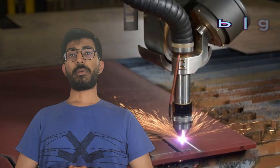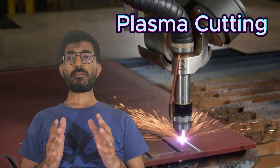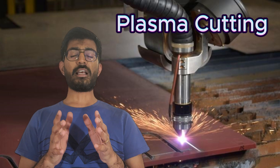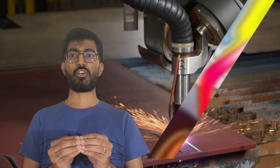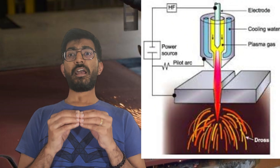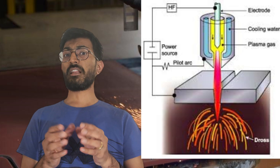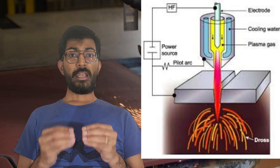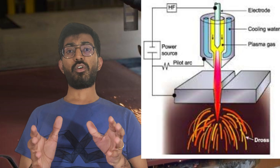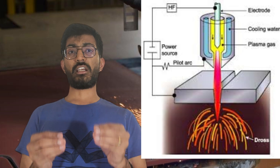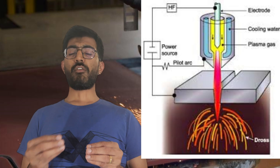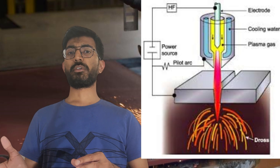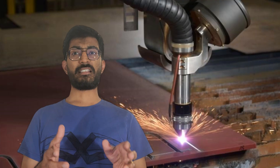Cutting method number two is plasma cutting. This method utilizes a super-heated plasma torch to cut through metal. It is faster than laser cutting and can handle quite thick material, but it may not offer the same level of precision as laser cutting.